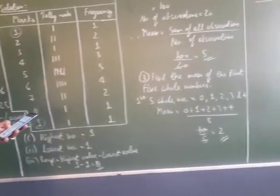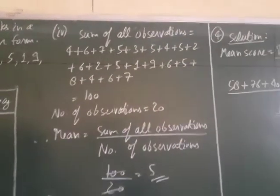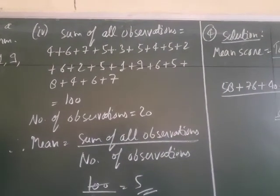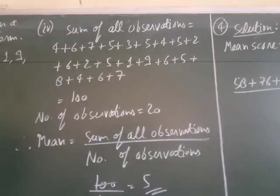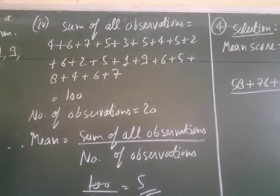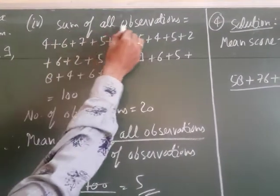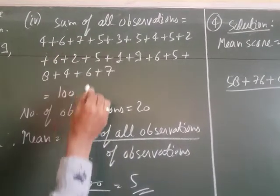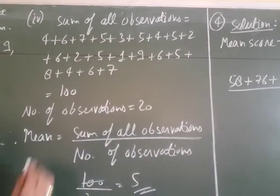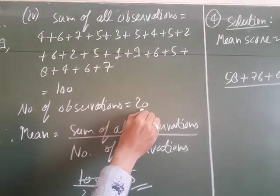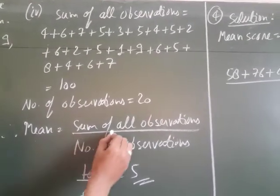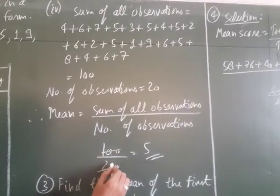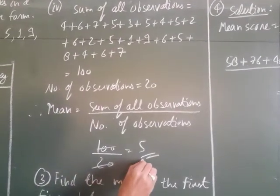Fourth part: find the arithmetic mean. The formula is: sum of all observations divided by number of observations. The sum of all observations is 100 and the number of observations is 20. So mean = 100 divided by 20 = 5.